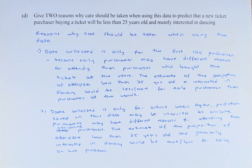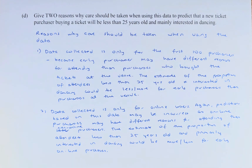Good day! In this video, we are going to try and solve question 3D, the last question of the 2021 NCEA Laboratory Probability Concepts paper. Without further ado, let's read question 3D: Give 2 reasons why caution should be taken when using this data to predict that a new ticket purchaser buying a ticket will be less than 25 years old and mainly interested in dancing.